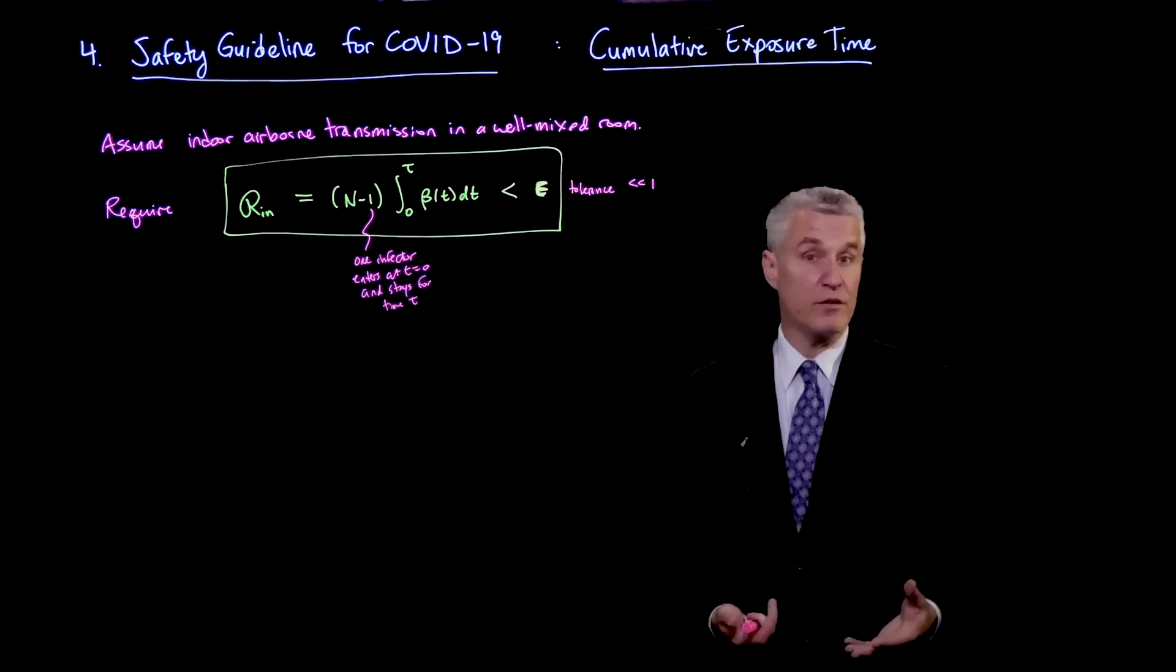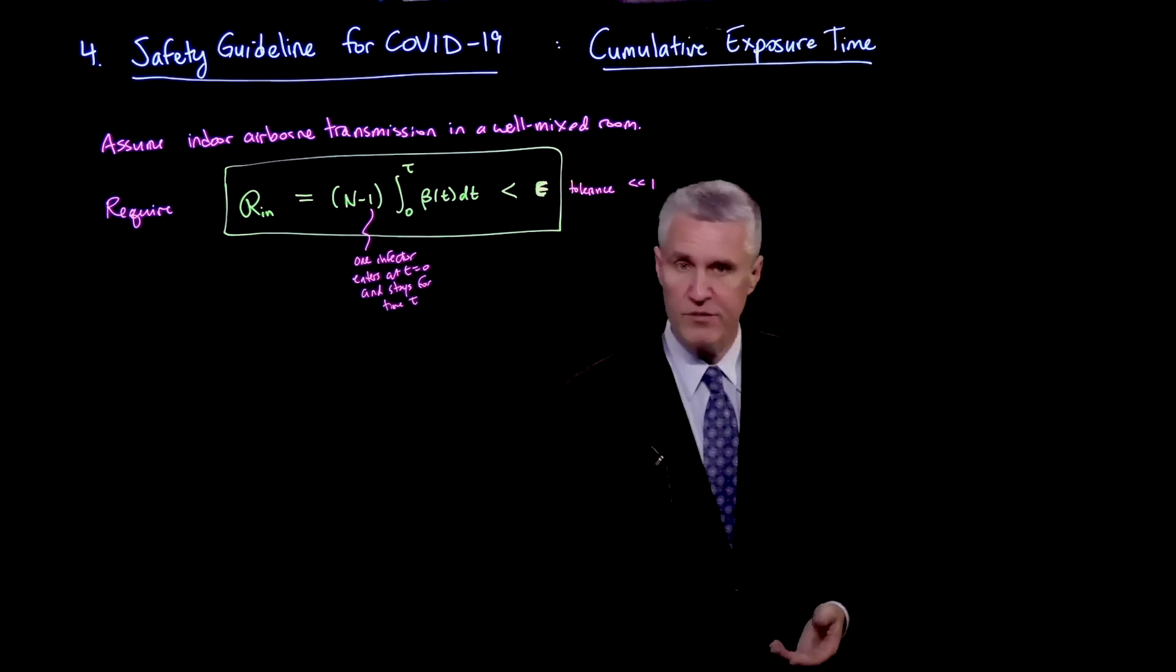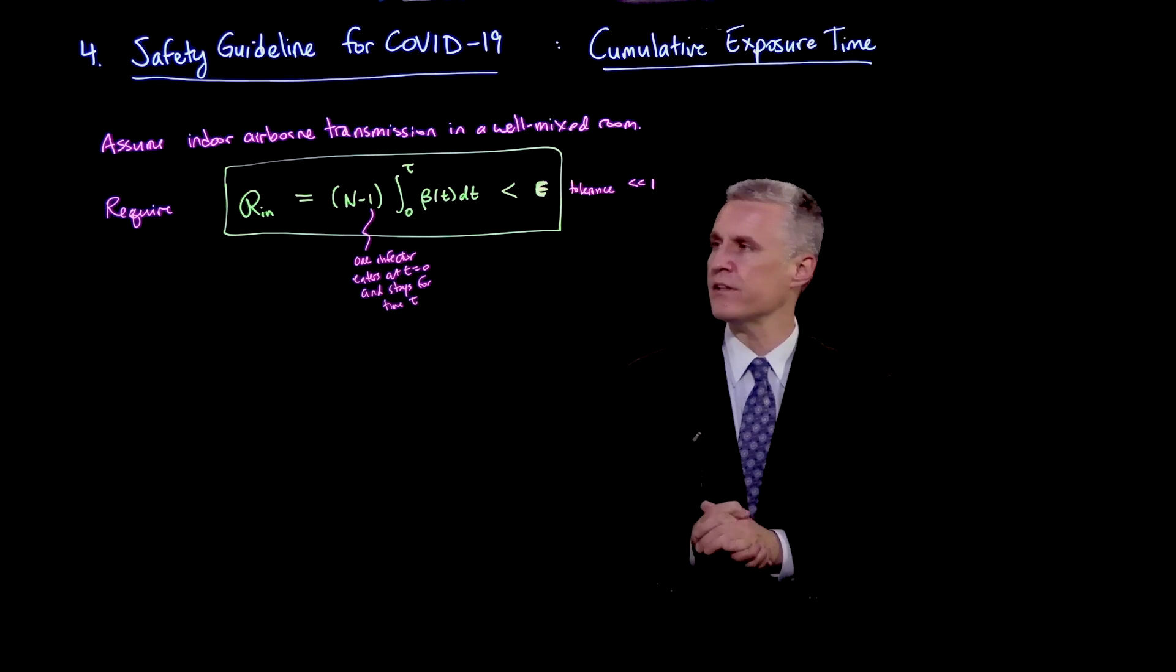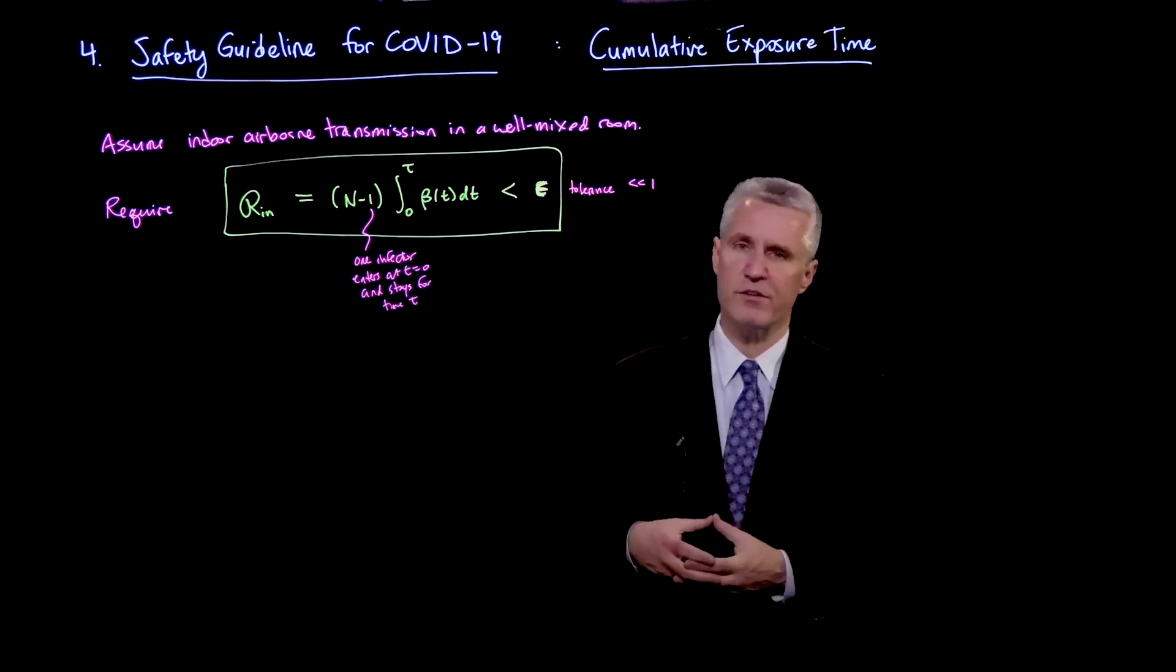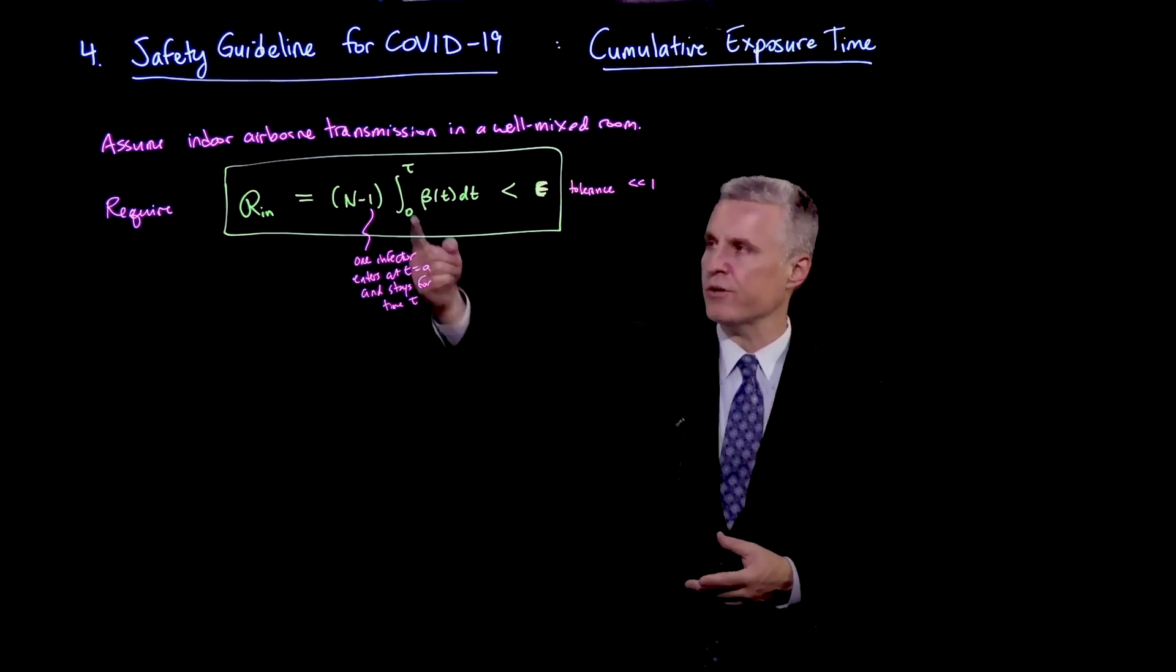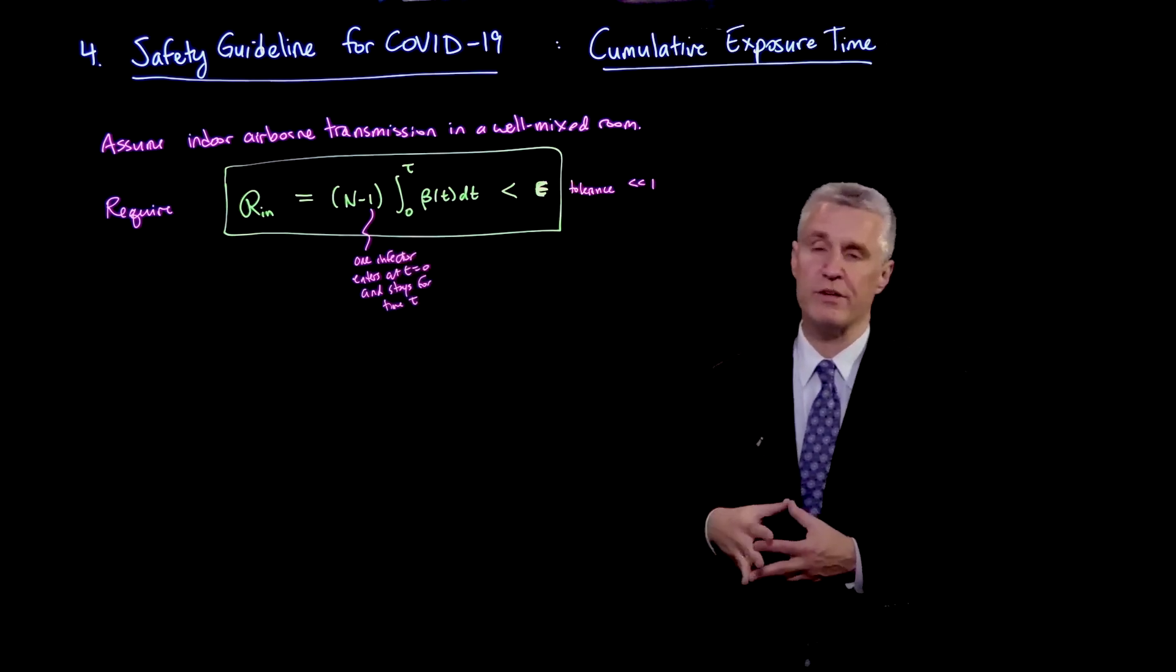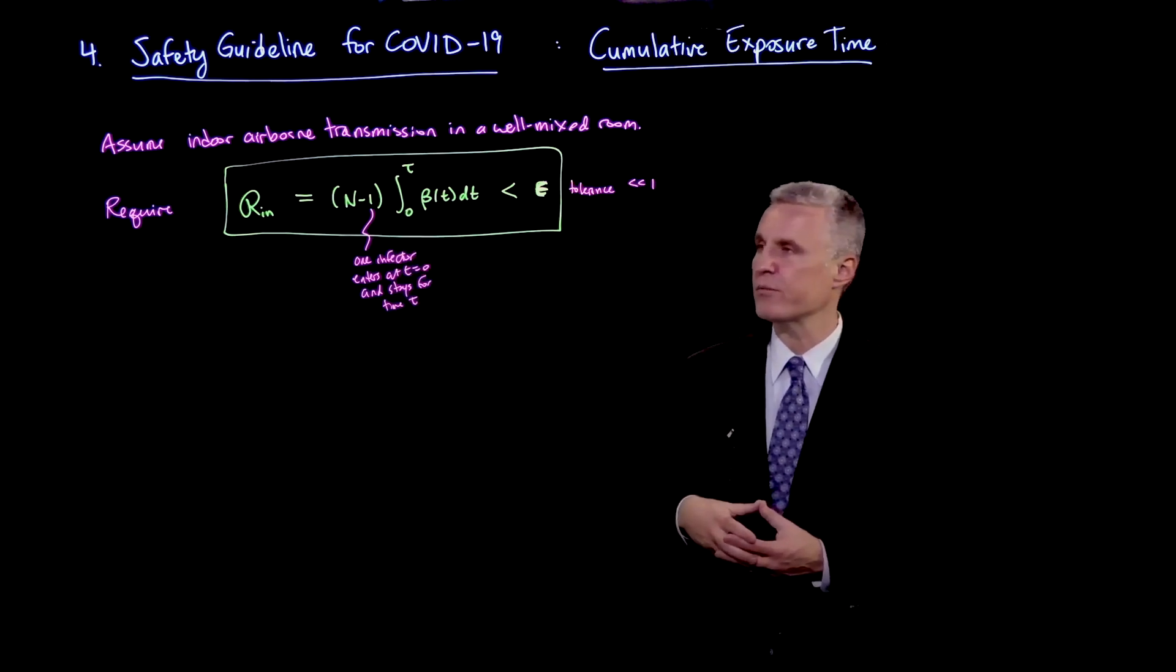Obviously, this doesn't handle every possible situation. It is possible if there's a very prevalent infection rate in the community that the room may find several infectors entering at once, in which case we could certainly increase this number. And then the 1 here would be replaced by I0, as we've seen before.